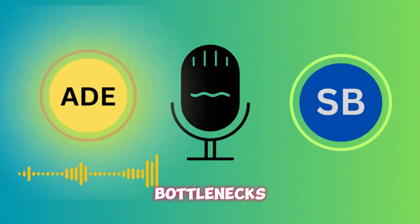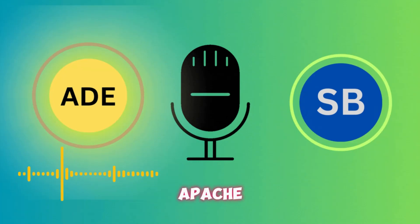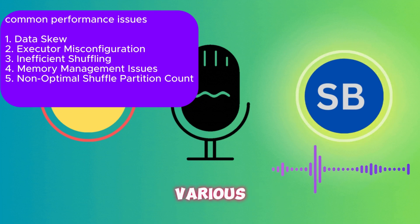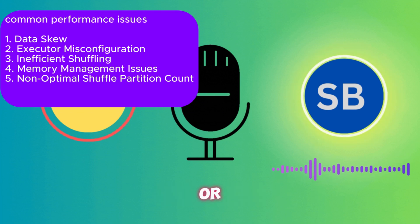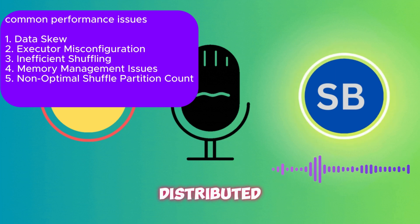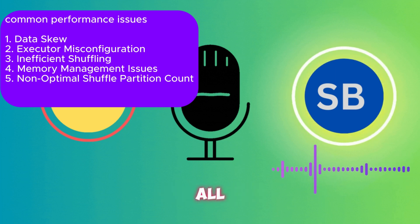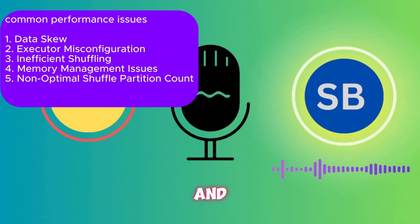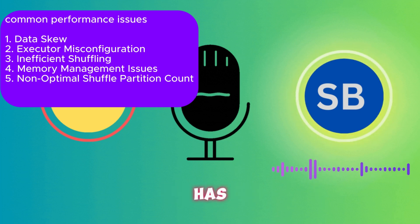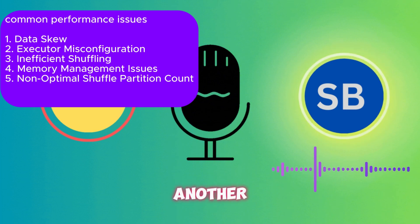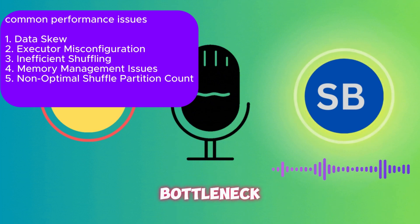What are some common performance bottlenecks in Apache Spark applications? The major one is the data skew issue — data is not distributed equally across all executors. One executor might have much more data while others have very little, which creates a bottleneck in processing.